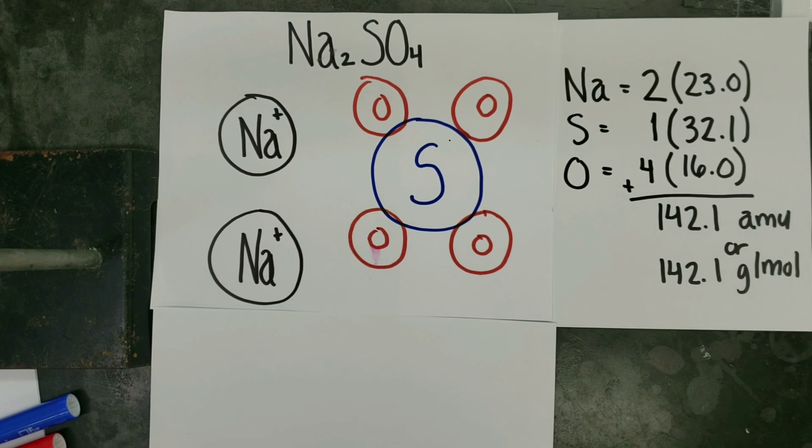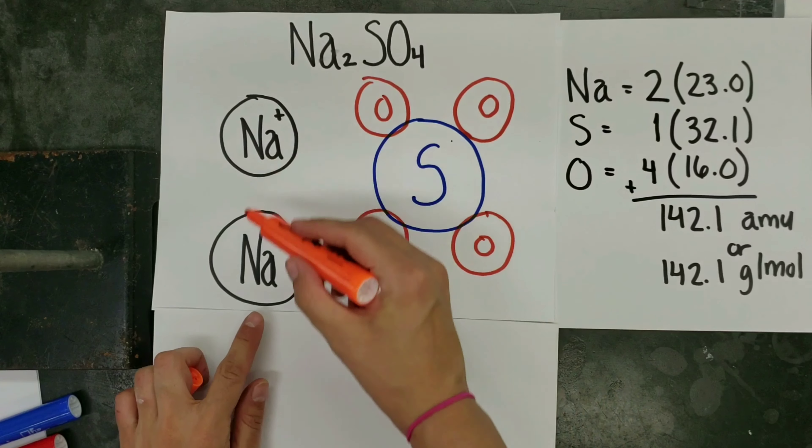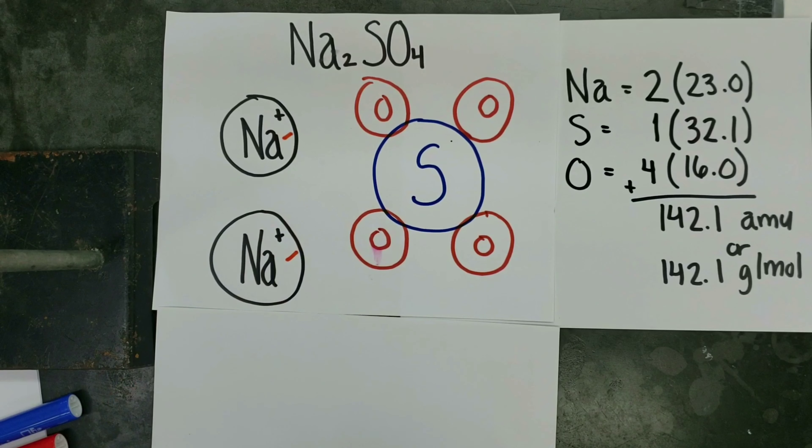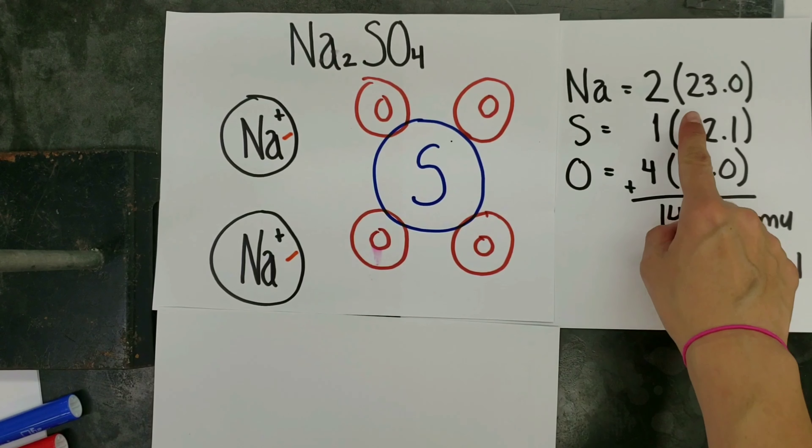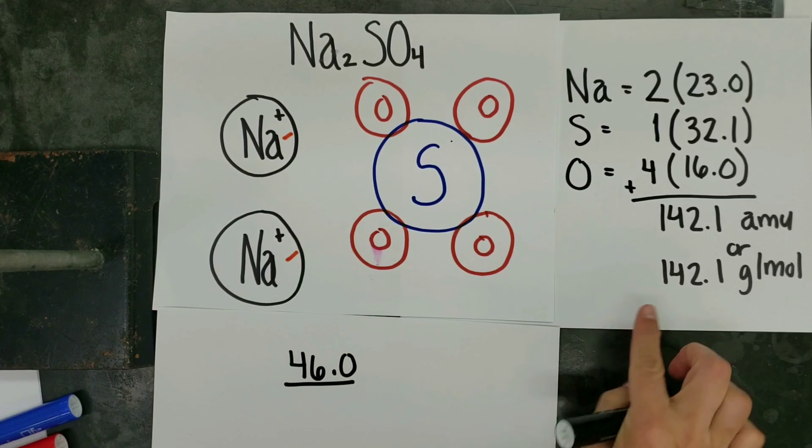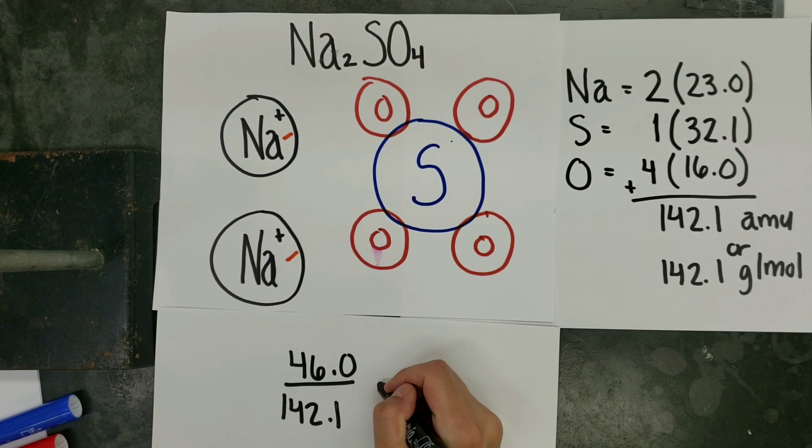Now let's look at the example where we try to find the percent by mass of sodium in sodium sulfate. We have this formula here, so we're trying to find how much mass do these two sodium ions contribute towards the mass of the entire substance. So in order to answer this, we're going to take the mass of two sodiums here, which we know is 46, divided by the mass of the entire substance, times 100.